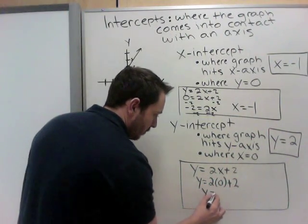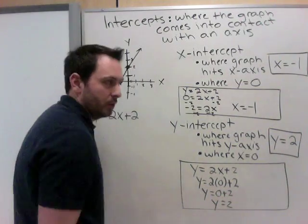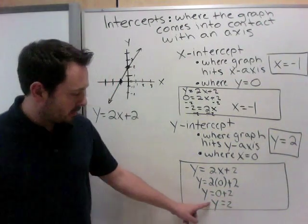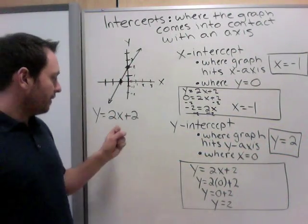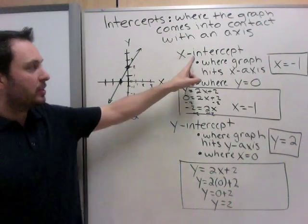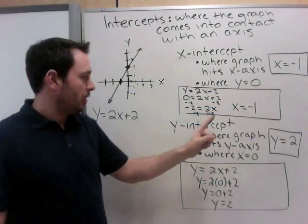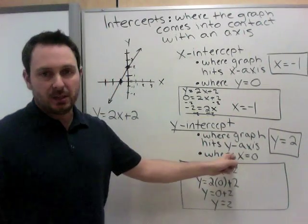Anything times 0 is 0. So y equals 2. And you can see, y equals 2 is the same as I got here. So if you don't have a graph, you can find it using an equation. X-intercepts are when y is 0. Y-intercepts are when x equals 0. Put that number in the equation and solve it.